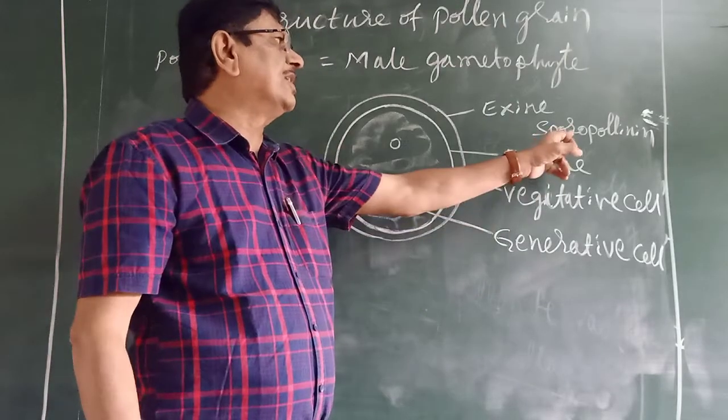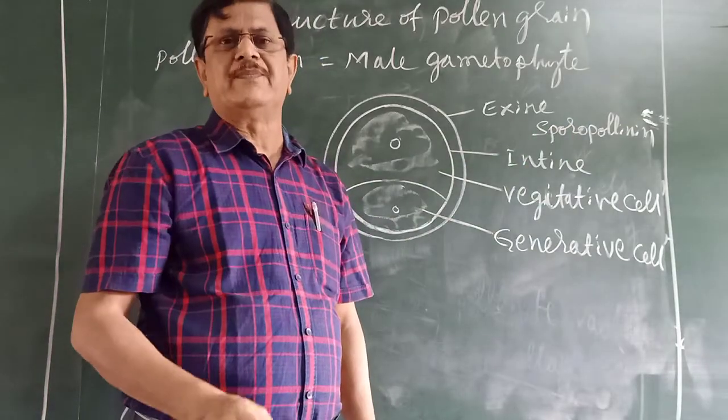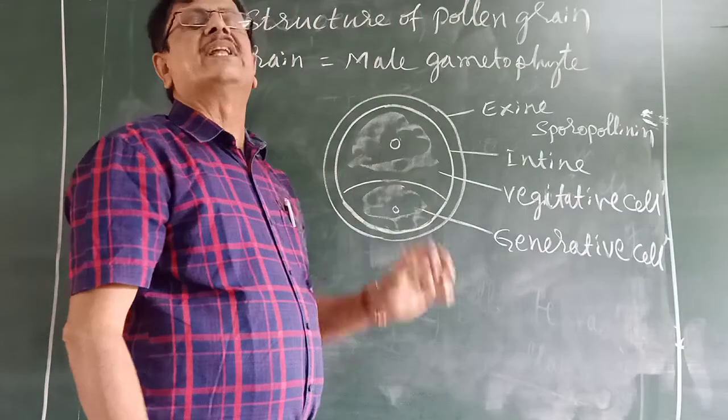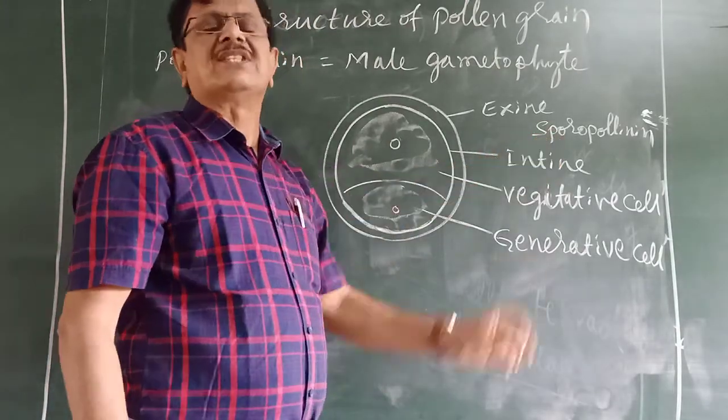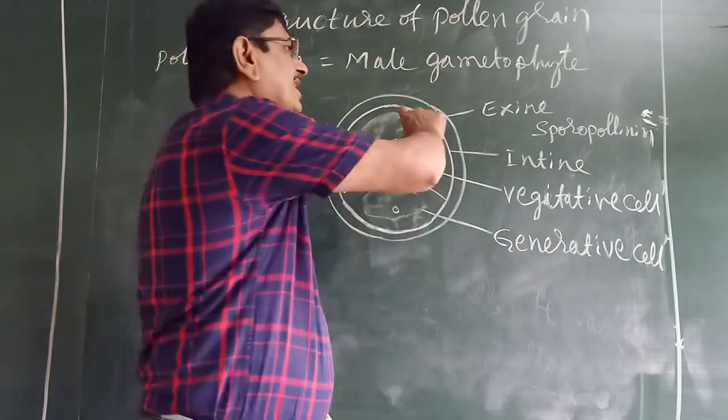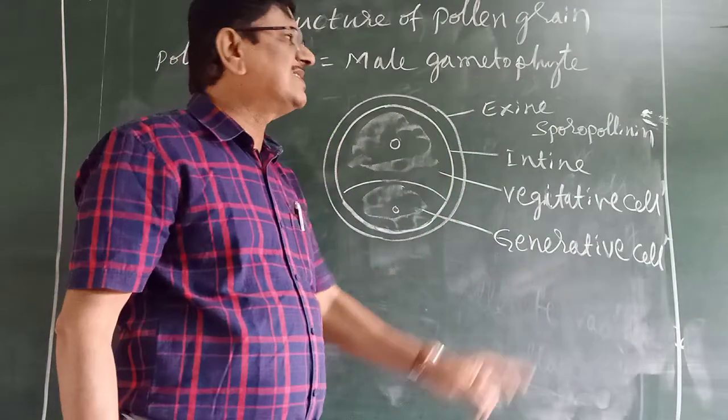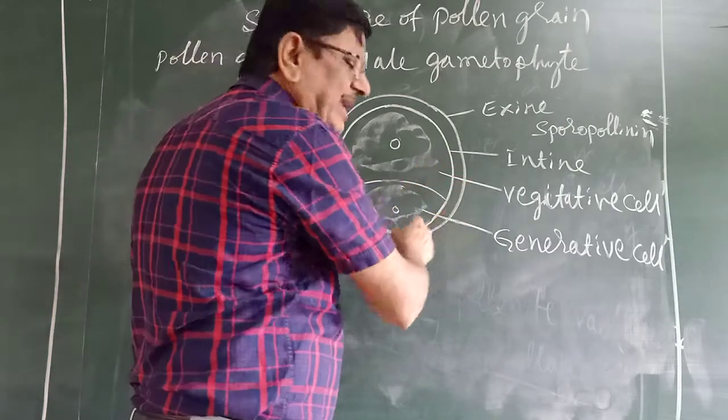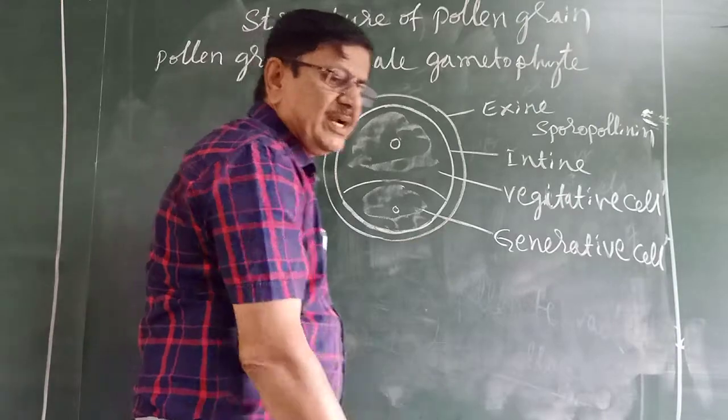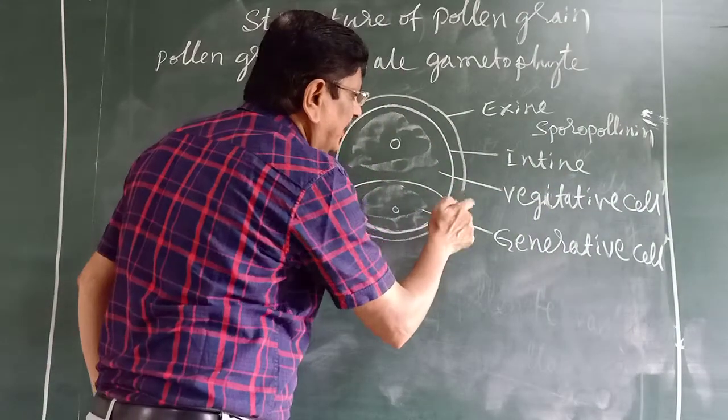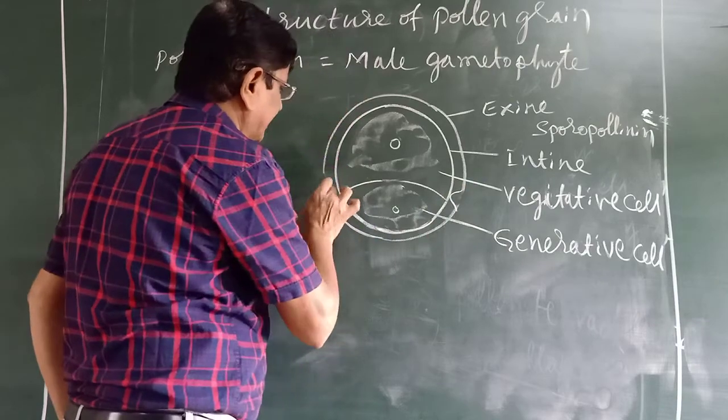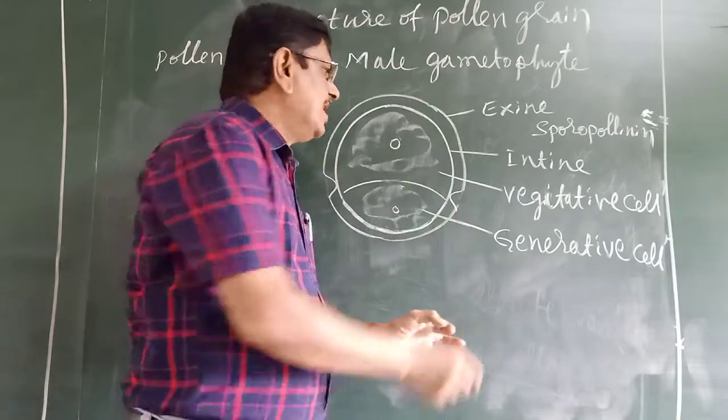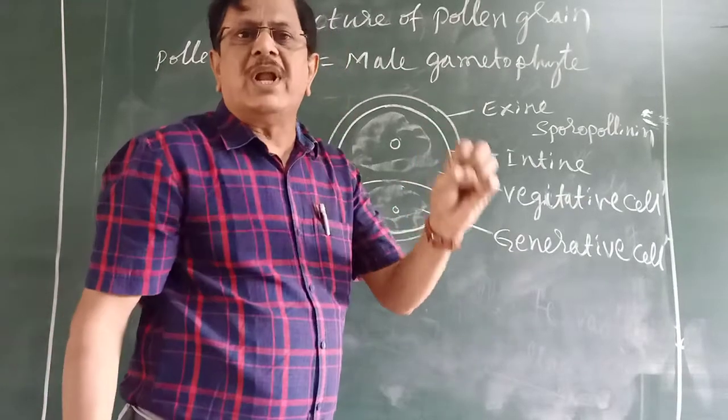Exine is not destroyed by temperature, acid, or alkaline because of sporopollenin. That is why we have fossils like ten thousand years old. This external layer, the outer covering membrane called exine, is made up of sporopollenin. The sporopollenin is not uniform here and there. The exine is thin in some regions, and through these thin areas, the pollen tube develops.